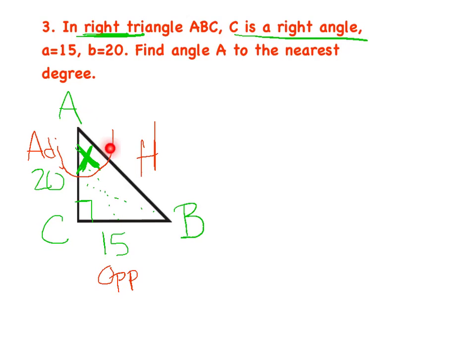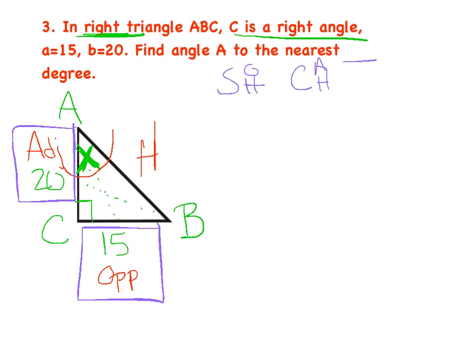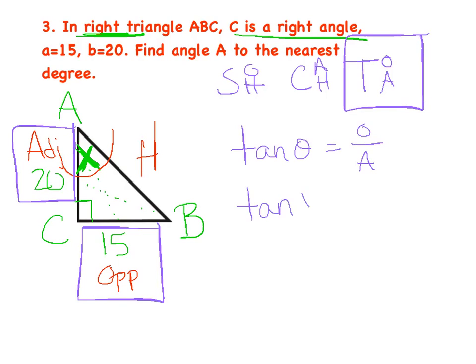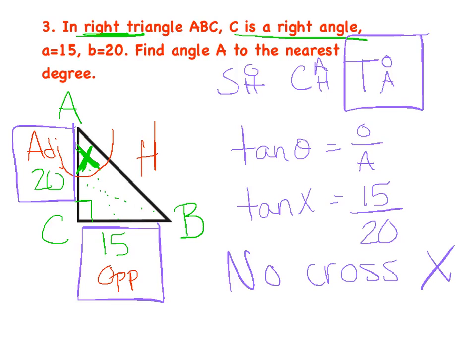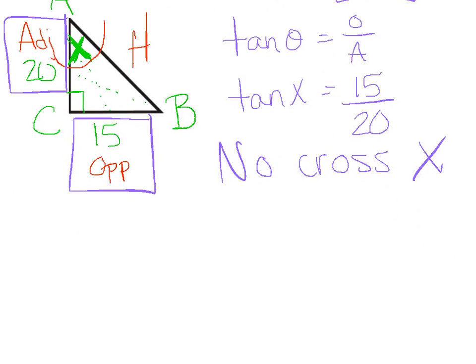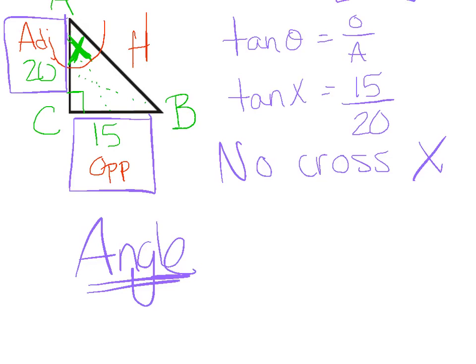Label your sides. Hypotenuse is across from the right angle. Mark the angle you're solving for (angle A). Adjacent means next to that angle; one is already hypotenuse, so the other is adjacent. Opposite means across from the marked angle. Box in the two you know — opposite (15) and adjacent (20) — so you're using O and A. Writing SOH-CAH-TOA, O and A gives tangent. So: tangent of X = opposite over adjacent = 15/20. This time there is no cross-multiplying — to solve for an angle, press 2nd then your trig function (2nd TAN).